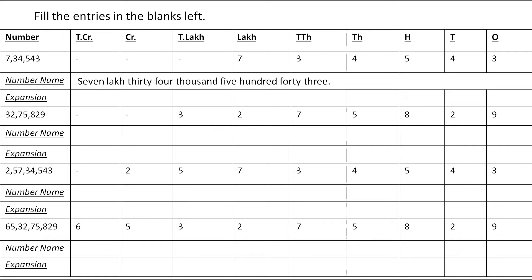Now we have to expand this number. If you want to know more about expansion, check out my last video where I taught expansion in detail — the link is in the description. To expand, we write the first digit and multiply it by the value of that place, then add a plus sign and take the next digit multiplied by its place value. The expansion of this number is: 7 × 1,00,000 + 3 × 10,000 + 4 × 1,000 + 5 × 100 + 4 × 10 + 3 × 1.